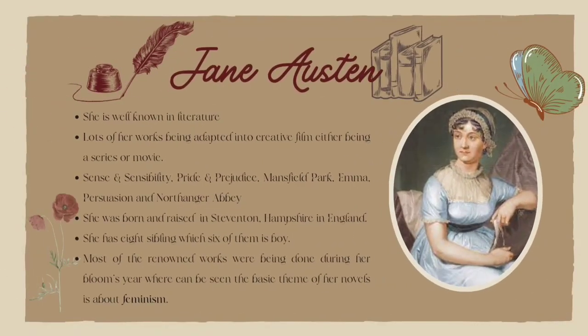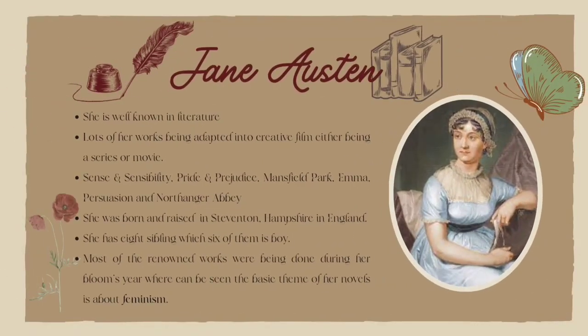Jane Austen is well known in literature and lots of her works have been adapted into creative film, either being a series or movie. She was born and raised in Steventon, Hampshire in England. She has 8 siblings, 6 of them boys. Most of her renowned works were done during her blooming years, where the basic theme of her novels is about feminism.